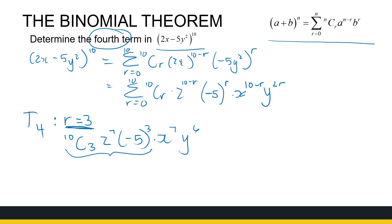This is the whole coefficient, so we can see it's going to be a negative number — quite a big number. It's −1,920,000 x^7 y^6. Sometimes these numbers get a bit big to write out, but just understand that the coefficient comes from the numbers we have.